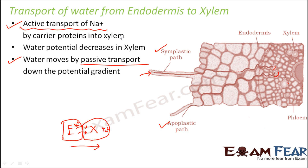Once water has reached the xylem, the challenge is how xylem will take this water up against gravitational force. Water potential decreases as we go up the tree, but that alone is not strong enough to govern upward movement in big plants. So water must move from the xylem of the root to the xylem of the stem and leaves, and some mechanism must enable this upward movement.